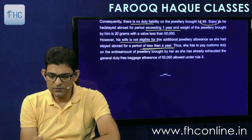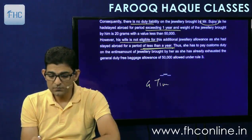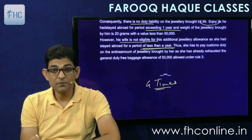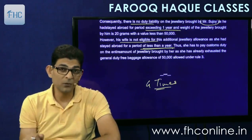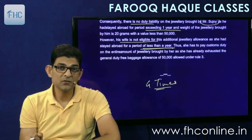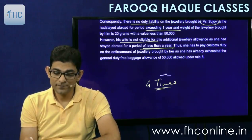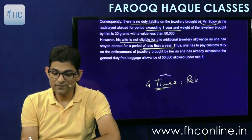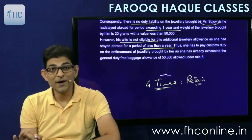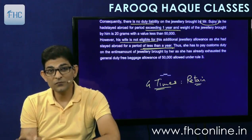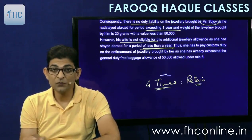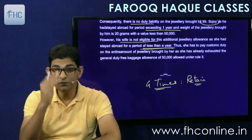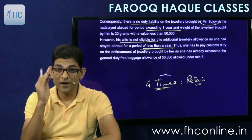You have to study the baggage rules at least 4 times and remember all the amounts — 50,000, 15,000, jewelry exemptions of 50,000 and 1 lakh as the case may be, and for TR all the different figures. It is not just logic but also memorization.